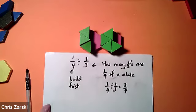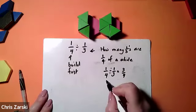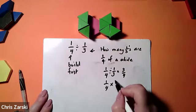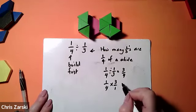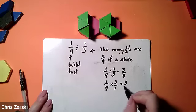Now if I do it the algorithmic way, flip and multiply, one times three, four times one.